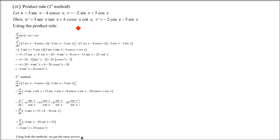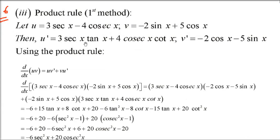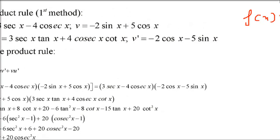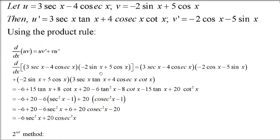For part (c), f(x) = (3secx − 4cosecx)(−2sinx + 5cosx). We compute u' and v': derivative of 3secx is 3secx·tanx; derivative of −4cosecx is +4cosecx·cotx. For v: derivative of −2sinx is −2cosx; derivative of 5cosx is −5sinx.